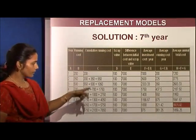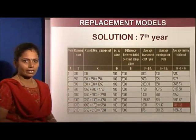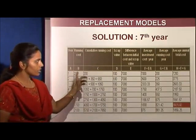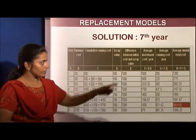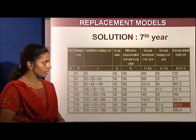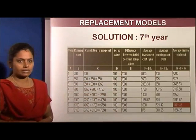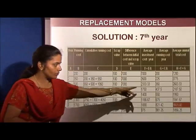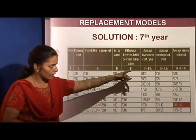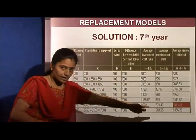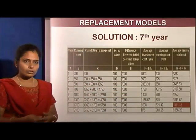The running cost is given; the cumulative running cost is calculated by adding all costs together. The scrap value is 100 at any point in time. The difference between initial cost and scrap value is always 7,000. The average investment cost per year and average running cost per year are calculated, and the average annual cost is the sum of both. When this value decreases and then suddenly increases, that turning point is key — at the seventh year, replacement gives the ideal solution.